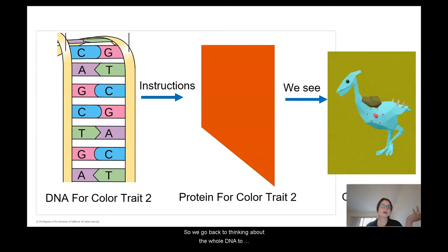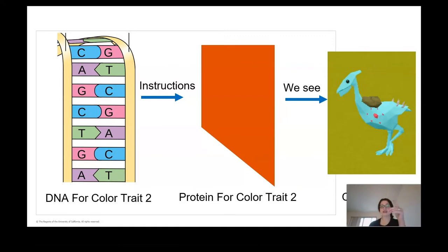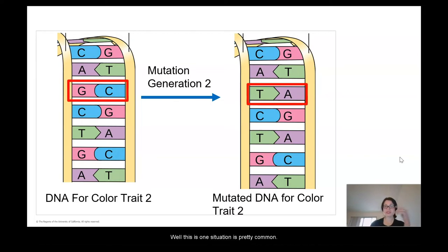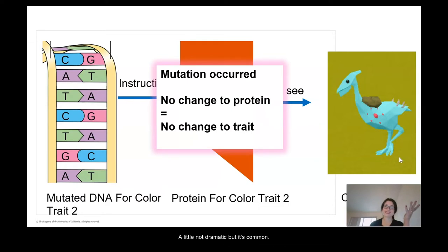Going back to the DNA-to-protein-to-trait concept: let's say that's the DNA for color trait 2, the protein it makes, and the trait we see in the end. If this ostrilope reproduces and has a baby and there's a mutation at birth — well, one common situation is you had a mutation but the protein literally didn't change and neither did the trait. Not dramatic, but it's common.